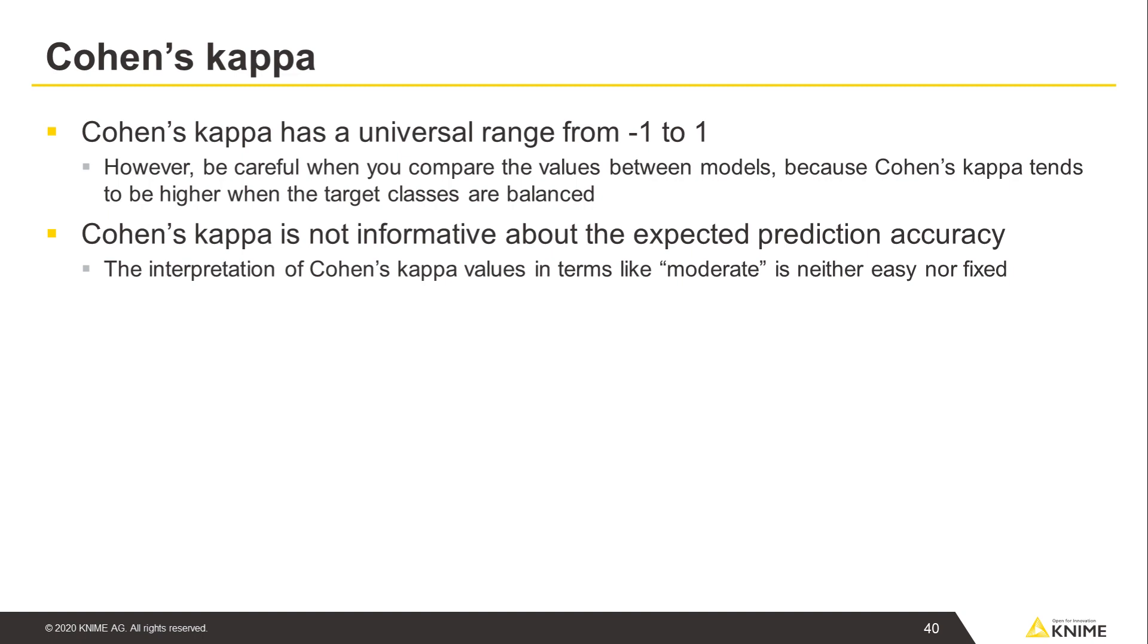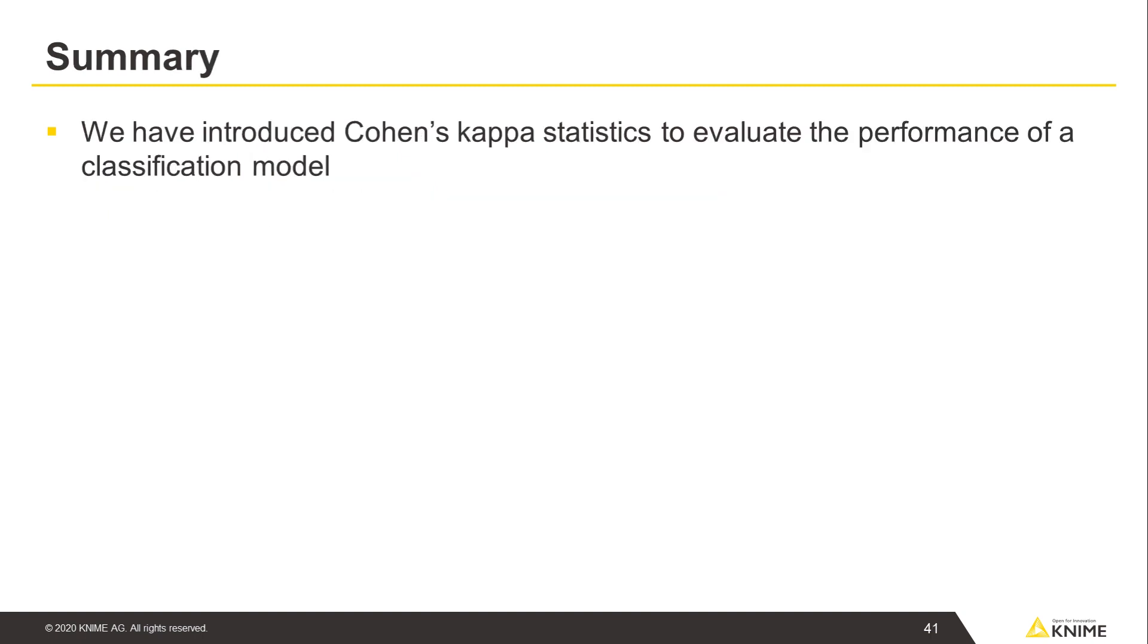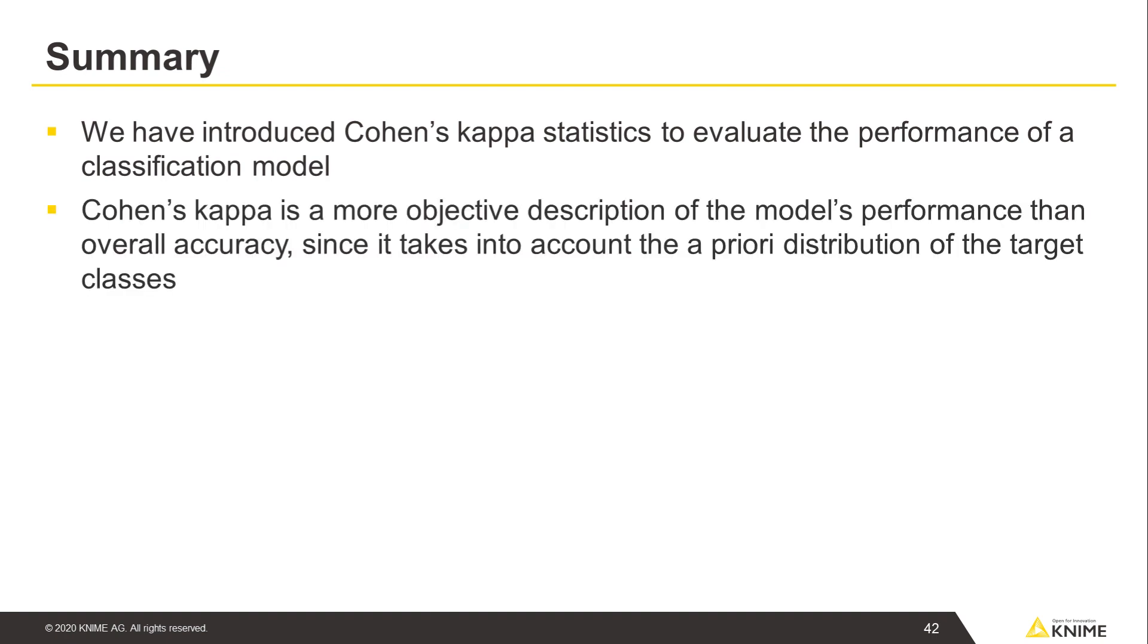In this video, we have introduced Cohen's kappa statistics to evaluate the performance of a classification model. Cohen's kappa is a more objective description of the model's performance than overall accuracy, since it takes into account the a priori distribution of the target classes. However, a clear interpretation of Cohen's kappa value can be challenging.